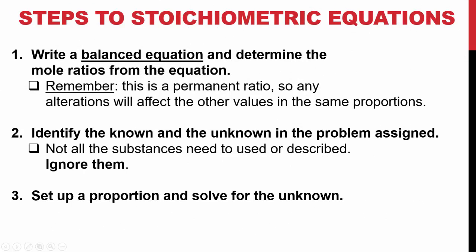In our steps to stoichiometric equations, the first thing you have to do is write down a balanced equation and determine the mole ratios from the equation. Remember, this is a permanent ratio, so any alterations will affect the other values in the same proportions. It's like taking a cooking recipe and forgetting that you have to add something, or forgetting the correct amount of cheese for your mac and cheese. The second step is to identify the known and the unknown in the problem assigned. Not all the substances need to be used, or not all the substances are described. Sometimes they will talk about things in your problems, but they're not important. We're going to ignore them. And the last step is we're going to set up a simple proportion and solve for the unknown.